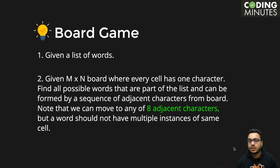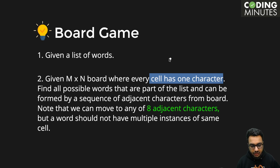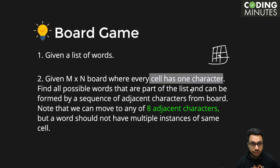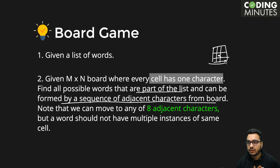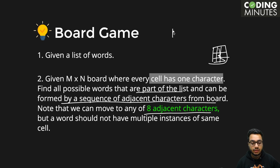The problem is a board game. Given a list of words and an m×n board — a 2D matrix where every cell has one character — you need to find all possible words from the list that can be formed by a sequence of adjacent characters from the board. From any given character, you can move in eight directions.